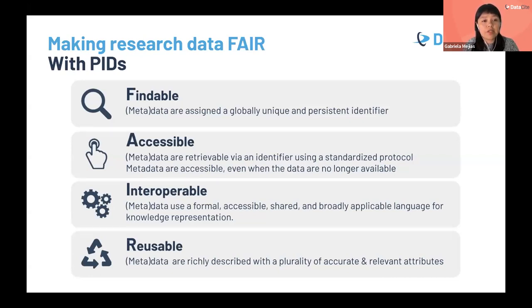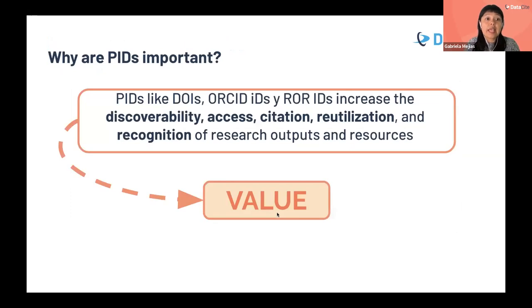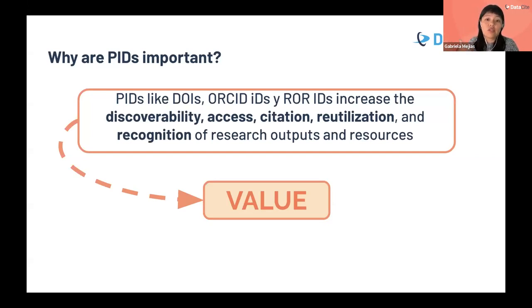If you haven't heard of the FAIR principles, these are some principles to make research findable, accessible, interoperable, and reusable. Persistent identifiers and their associated metadata are important because they help increase the discoverability, visibility, citation, and reuse of research outputs and resources. With all this, they help increase the recognition of research.